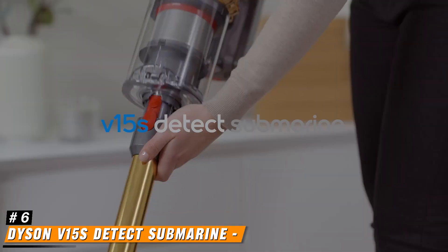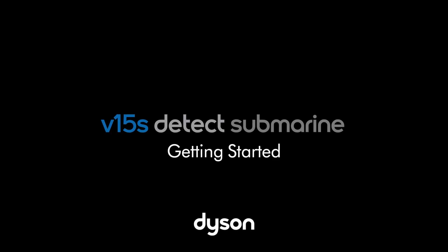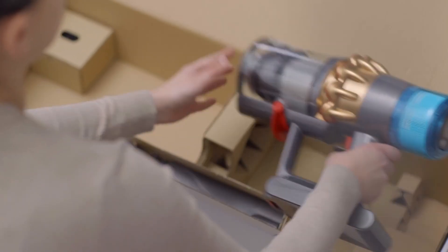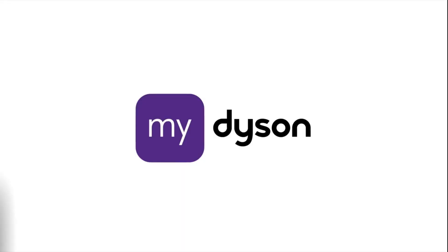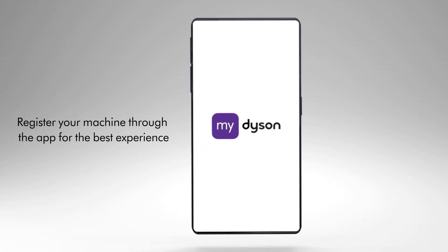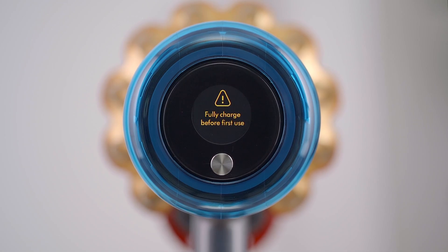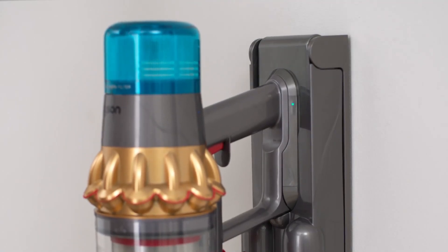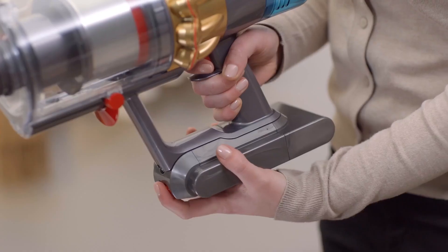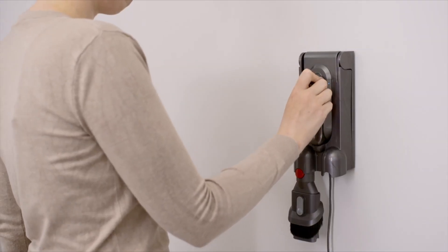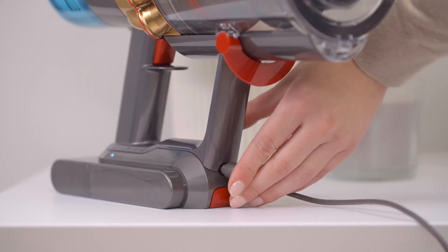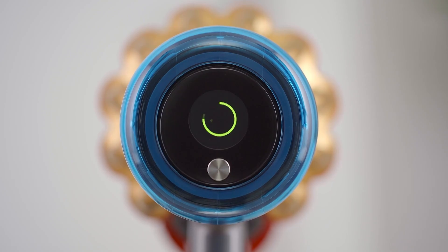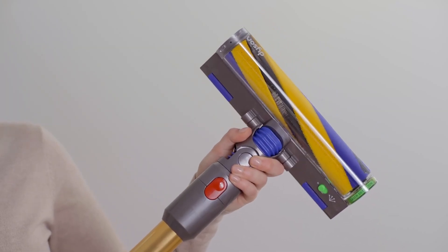Number 6. Dyson V15 Detect Submarine. The Dyson V15 Detect Submarine is a cutting-edge vacuum cleaner that epitomizes the blend of advanced technology and user-friendly design, making it one of the most sought-after cleaning devices on the market today. As the latest addition to Dyson's renowned line of cordless vacuums, the V15 Detect Submarine boasts an impressive array of specifications and features that cater to the needs of modern households.